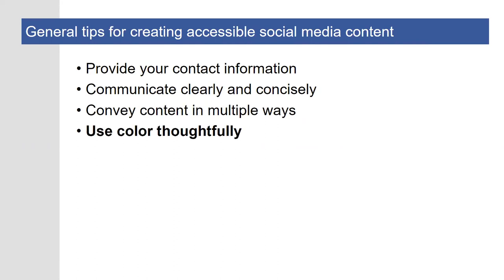Another general tip is to use color thoughtfully. When working with color, you must make sure that color isn't your only method of conveying important information. For example, listing do's in green and don'ts in red — that's a no-no. This is primarily to ensure your content is accessible to people who have color vision deficiency, sometimes called color blindness. By using more than just color to convey information, you're providing multiple means of representation.